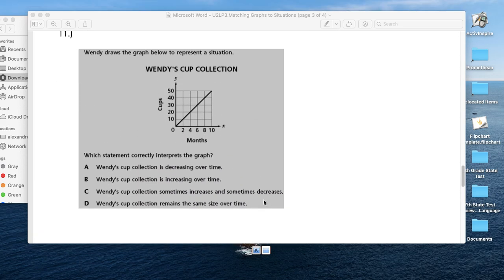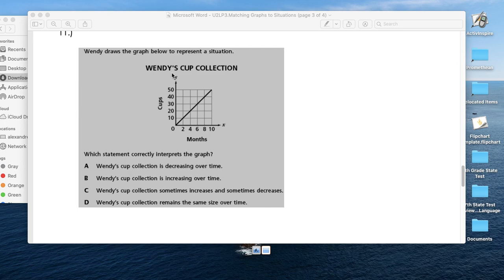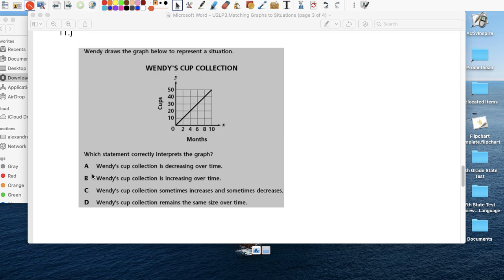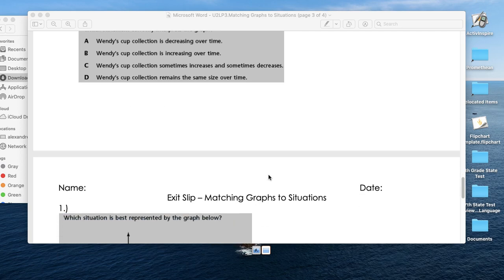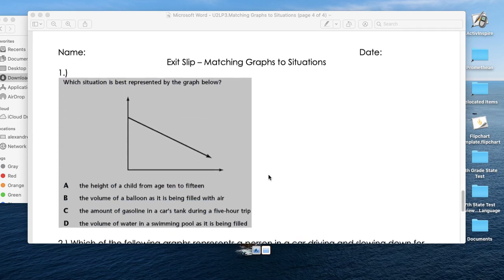Wendy's cup collection. Cups and months. Which statement correctly interprets the graph? Wendy's cup collection is decreasing over time. Well, definitely not. Wendy's cup is increasing over time. That looks like it. Wendy's cup collection sometimes increases, sometimes decreases. No. Wendy's cup collection remains the same size over time. No. So, obviously, B. Because you can definitely see an increase.